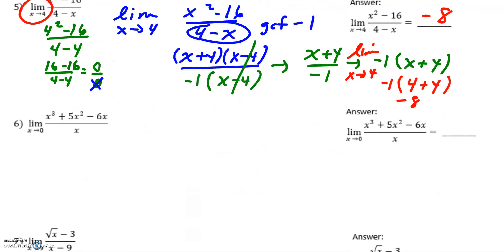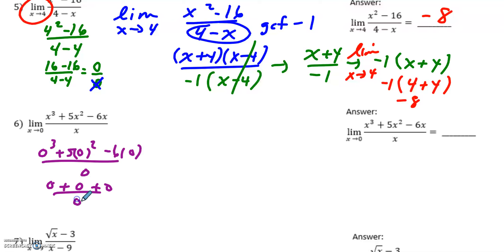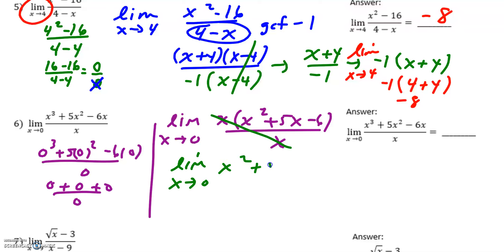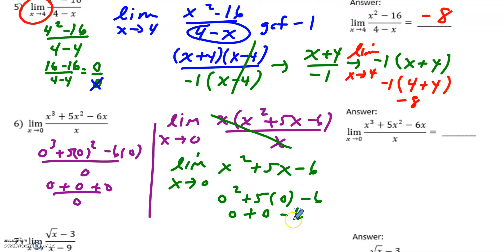Number six: the limit as x approaches 0. Plugging 0 in gives 0 over 0, same situation as before. So I factor: taking out a GCF of x from the numerator leaves x squared plus 5x minus 6, and the denominator is just x. The x's cancel, leaving the limit as x approaches 0 of x squared plus 5x minus 6. Plugging in 0 gives 0 plus 0 minus 6, so my limit is negative 6.